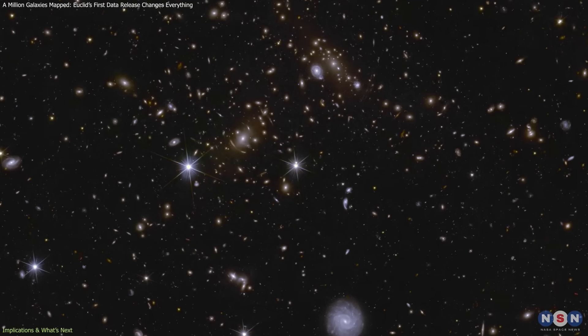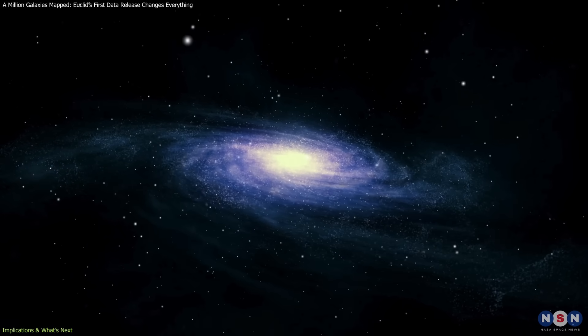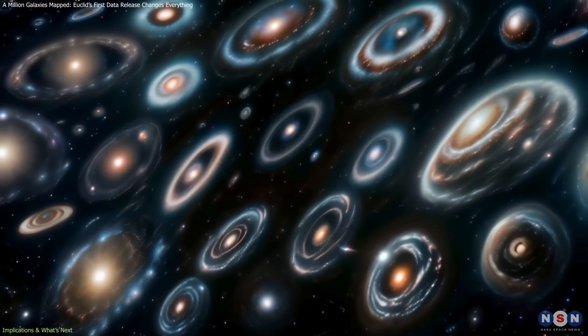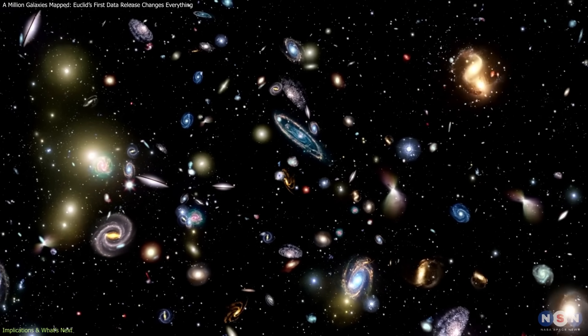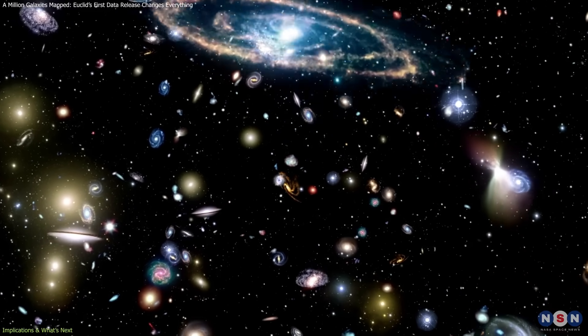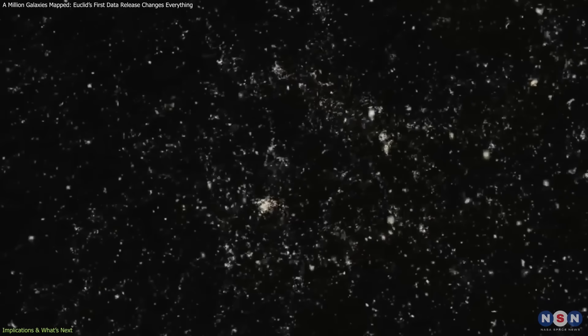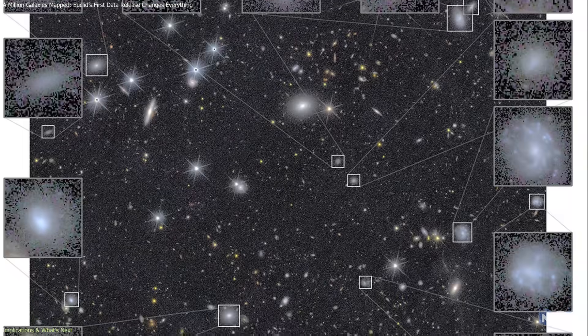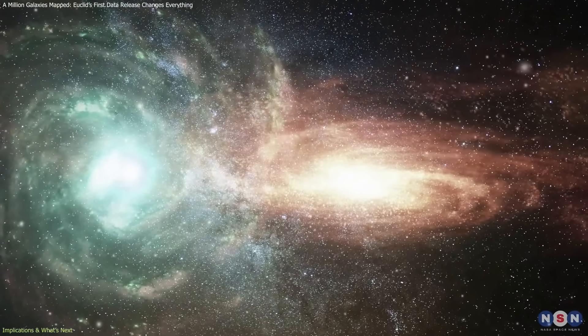What stands out immediately from these early results is the shift from studying individual galaxies to analyzing large populations. Instead of drawing conclusions from a few well-observed systems, astronomers can now study hundreds of thousands at once. This scale is essential for identifying trends, distinguishing rare objects, and understanding how galaxy properties depend on environment and cosmic time.